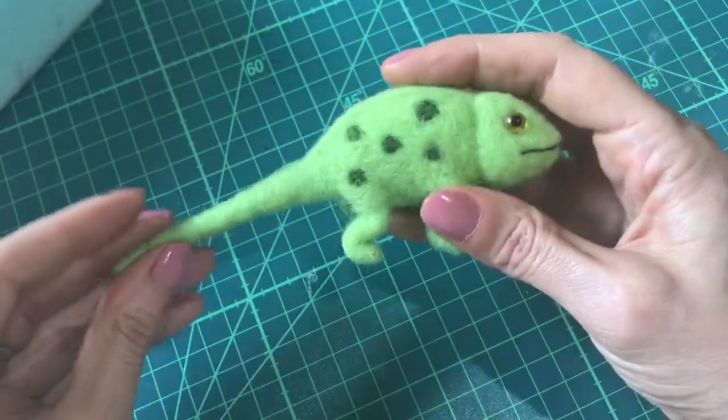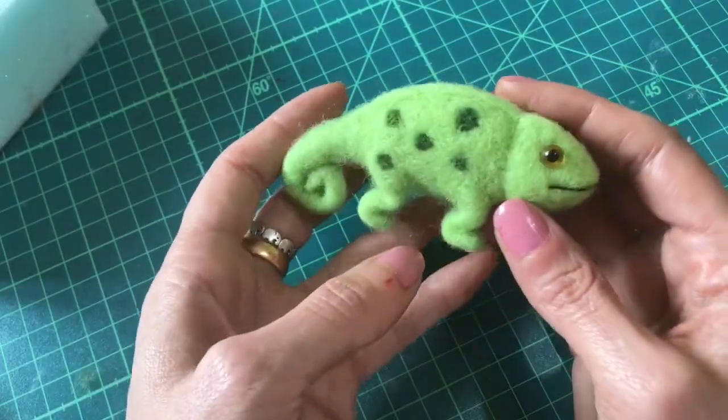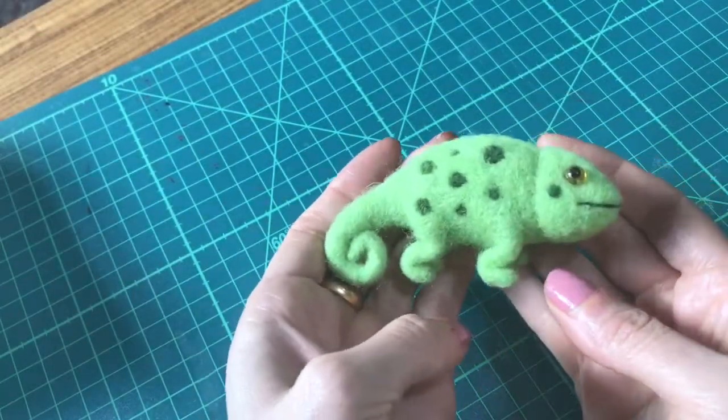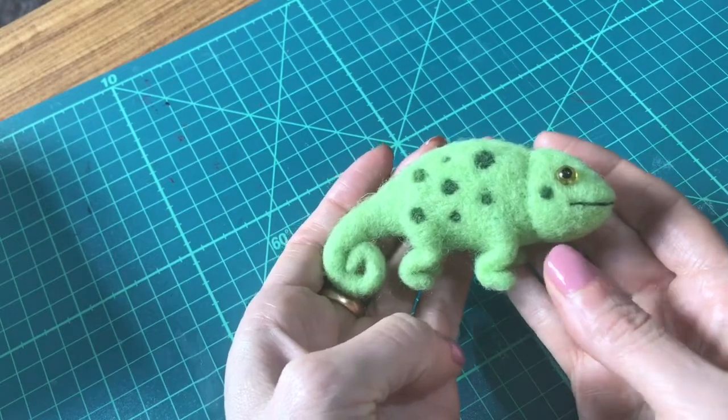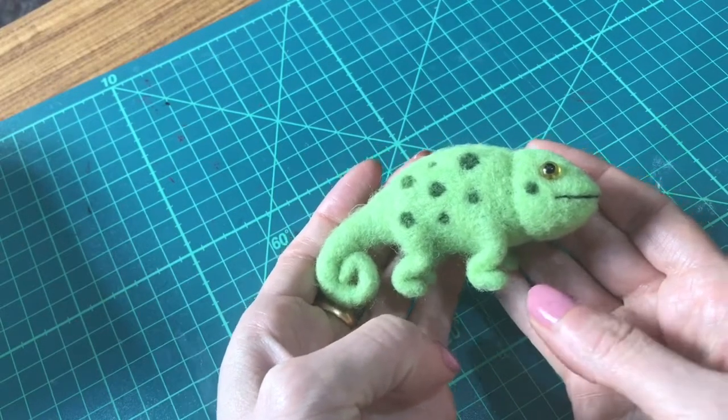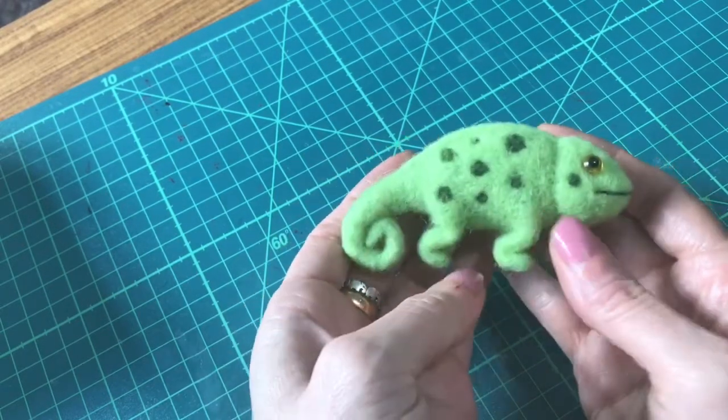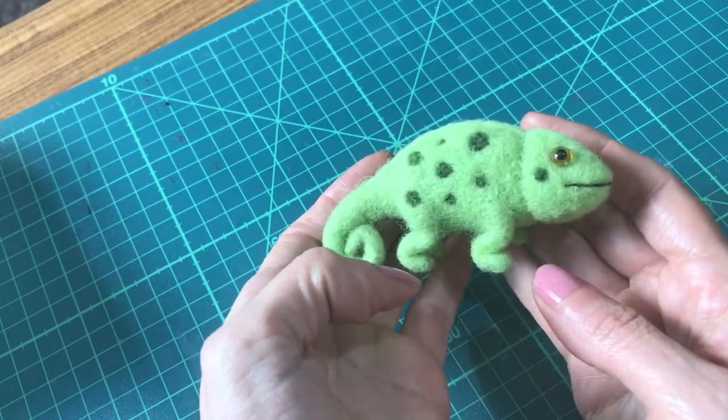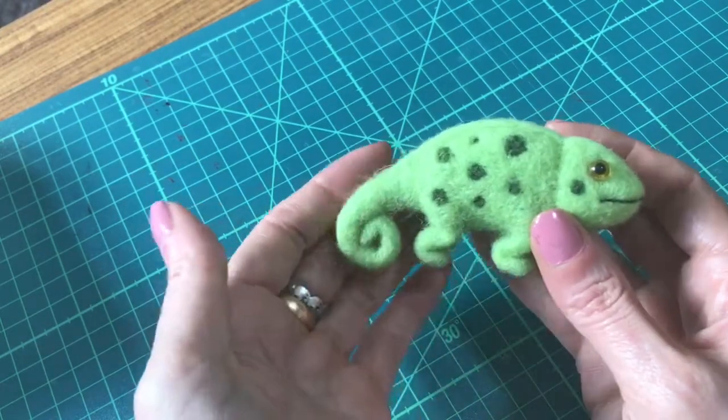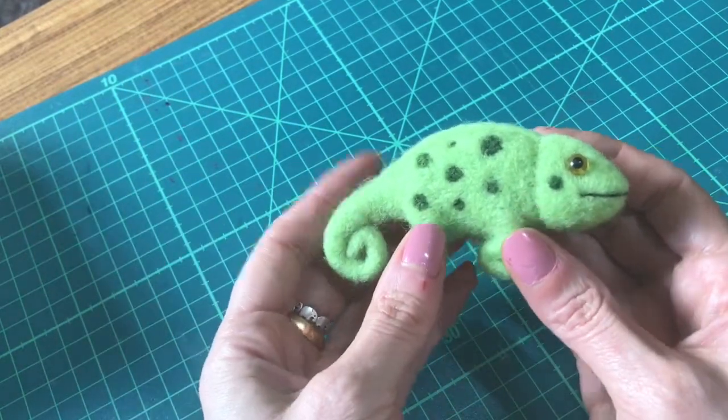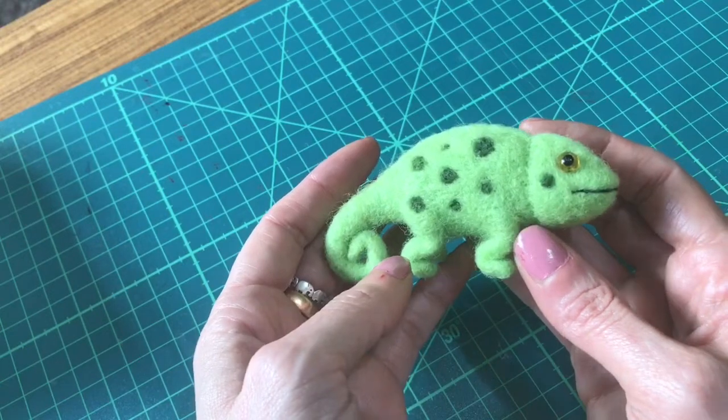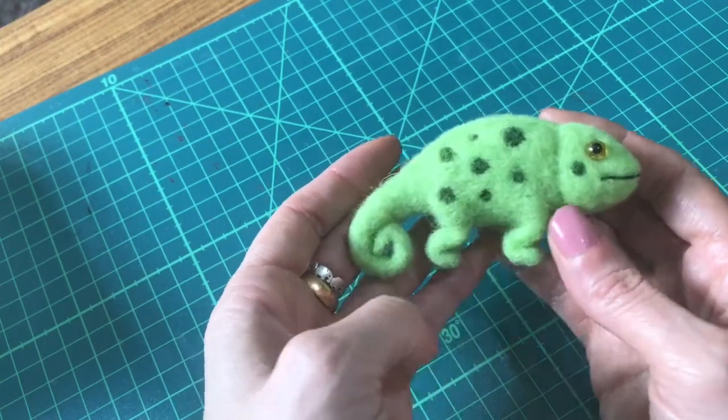Now we just curl the tail and there's our little chameleon friend all finished. I really hope you've enjoyed this video. I've got the full pattern with stencil sheets available over on my website thewishingshed.com along with lots of other patterns and kits, so feel free to check that out. You can make these in all different colors and sizes and have loads of fun. Thanks for stopping by today. Don't forget to like and subscribe and we'll see you back here soon.